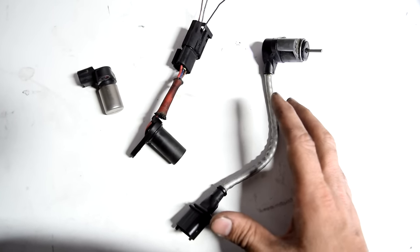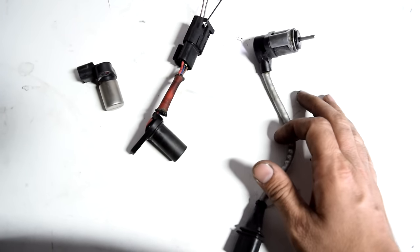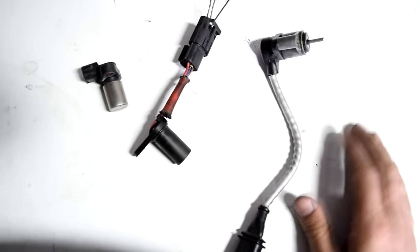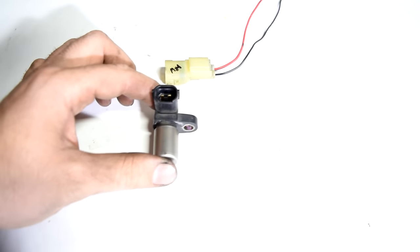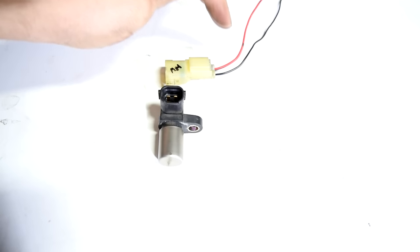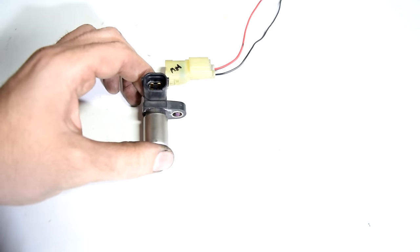Now there are more than a few different types of camshaft or crankshaft position sensors but for this video we're just going to concentrate on the two most common ones. And the first one is going to be this magnetic type sensor. Now these sensors will almost always have only two wires going to them and these sensors produce their own voltage.